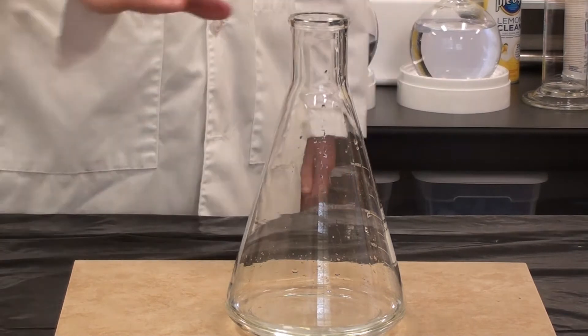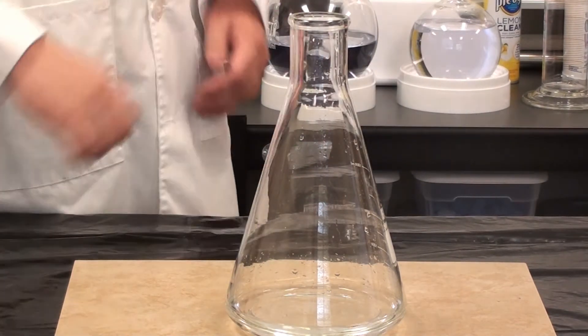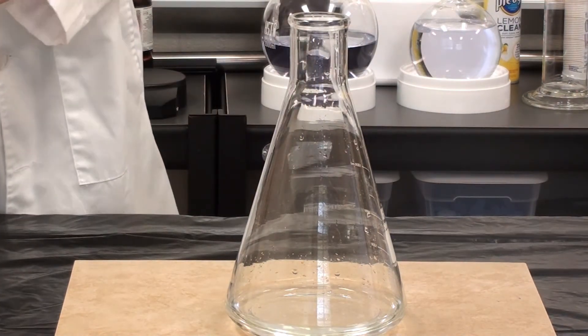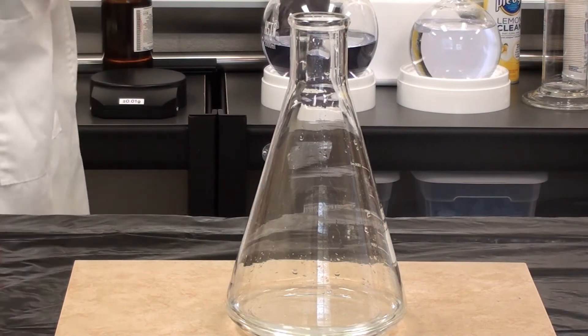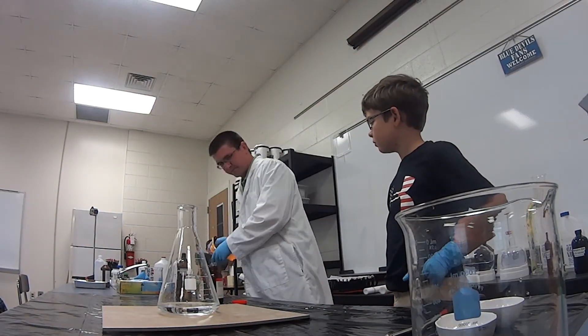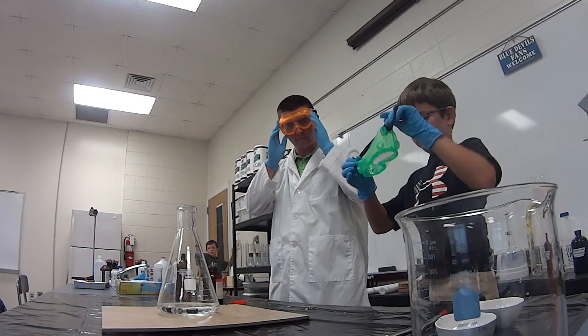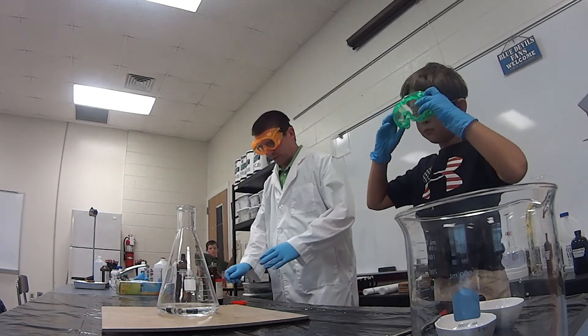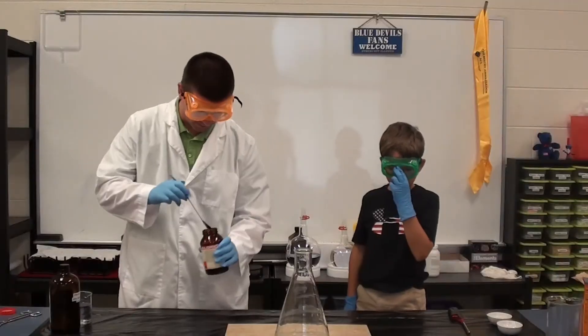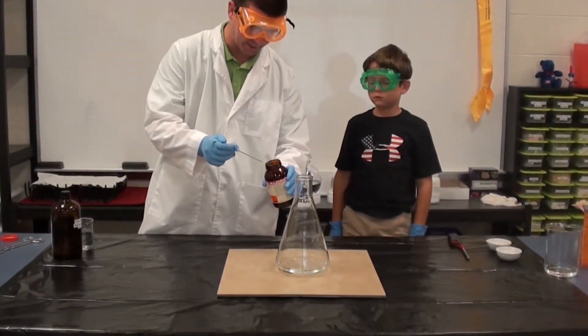But before we do it with the fire, I just want to let you see the reaction here. We're using a couple of chemicals. We're using just regular hydrogen peroxide like you'd get from the drugstore, and then we're using a chemical called potassium permanganate. So I'm going to have you put on some safety goggles here. I'm just going to add a little scoop of this potassium permanganate into our peroxide and just let you see the reaction that's taking place.